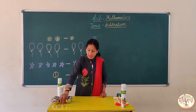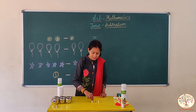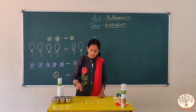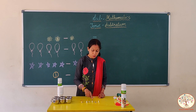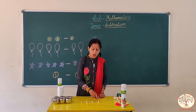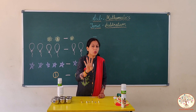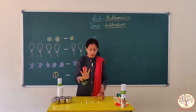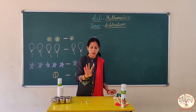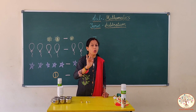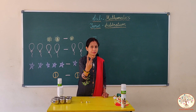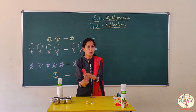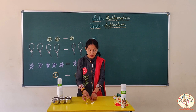Now, kids, I have some bells. Let's count them — one, two, three, four. How many bells are there? Four bells. Now, if I take away two bells — one, two — how many bells do I have? Two bells are left. So, four minus two is equal to two.